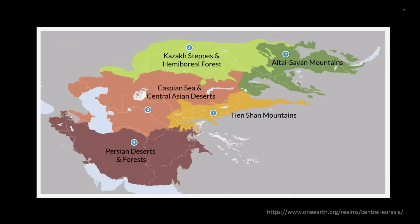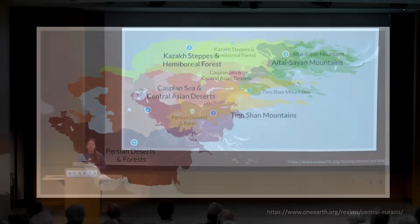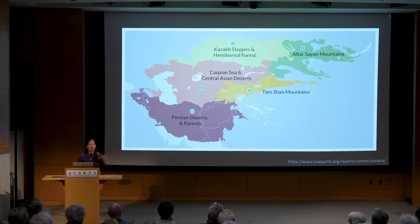We can think of various networks such as the networks of the Silk Roads that connected the East and the West, and also in more recent times the spread of religions such as Islam, represented here by one of the beautiful Central Asian oasis cities with their architecture. The region itself is quite diverse with regards to ecological zones — Kazakh steppes and forests in the north, Central Asian deserts, mountainous regions, and Persian deserts and forests.